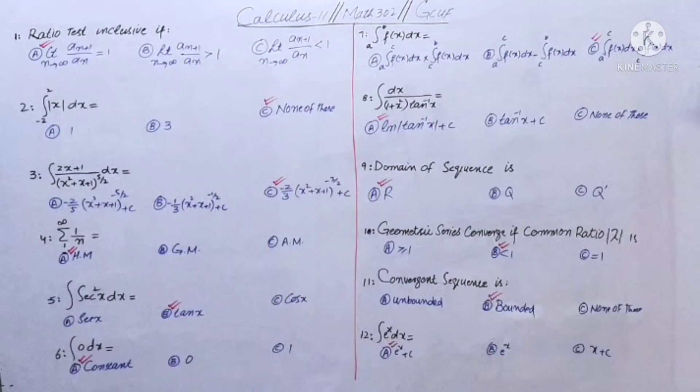MCQ number third: integral (2x+1) divided by (x²+x+1)^(5/2) dx. If we shift this equation, then we will have the denominator. So this term will be integral (x²+x+1)^(-5/2) and then (2x+1) dx. You have a function and then its derivative because x² derivative is 2x.